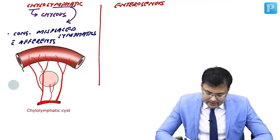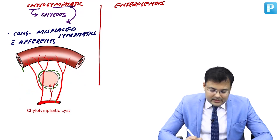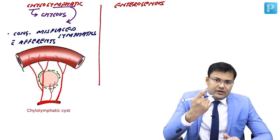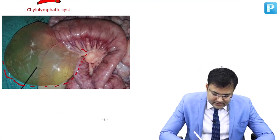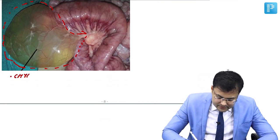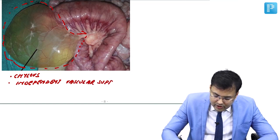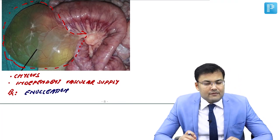If you see this diagram, this is the chylo-lymphatic cyst. This cyst is having its independent vascular supply and there is no shared wall. Since there is no shared wall, you can easily go for enucleation. Grossly, in relation to the mesentery, you can see the chylous fluid collected inside. Important points: there is chylous fluid, independent vascular supply, and no shared wall. Therefore the treatment in chylo-lymphatic cyst is enucleation.